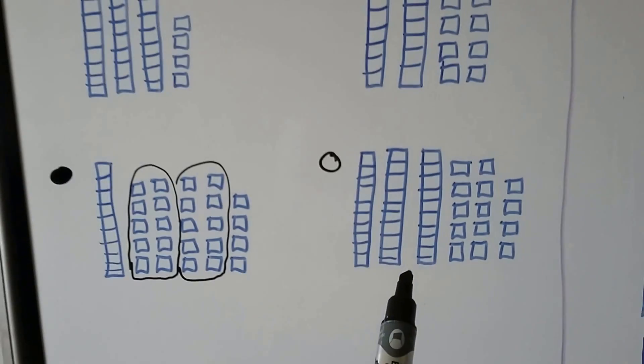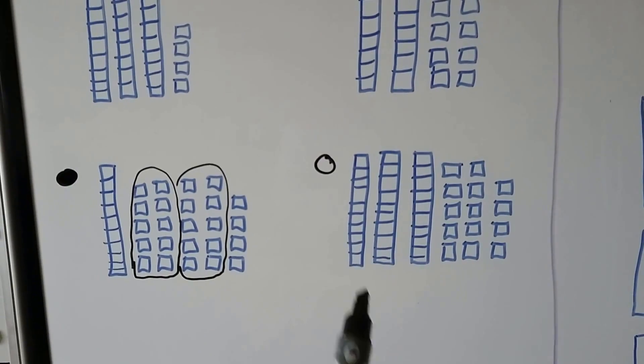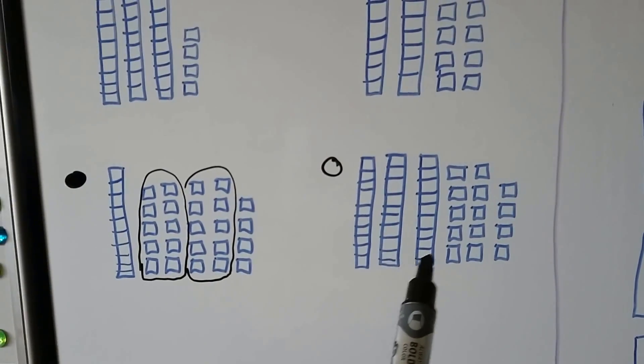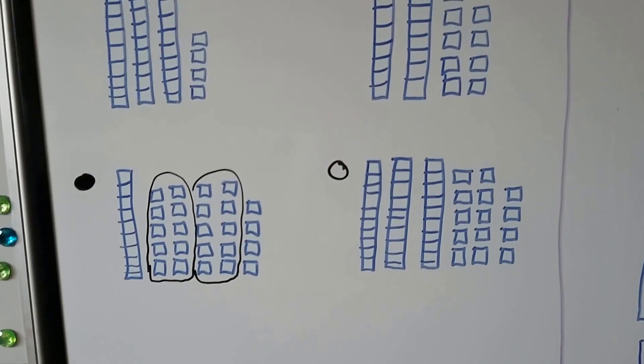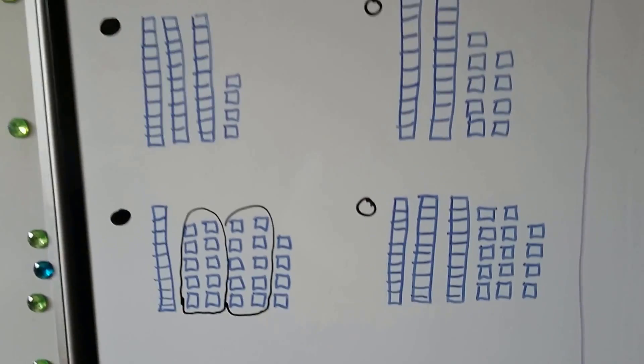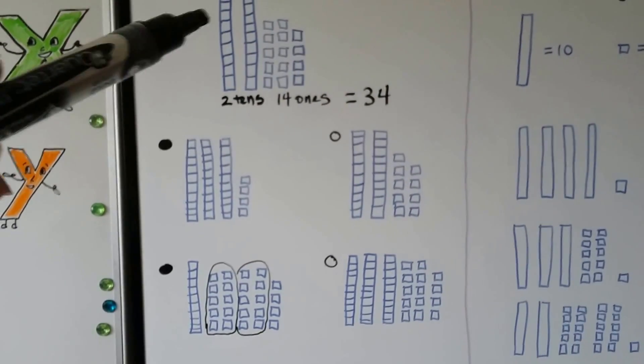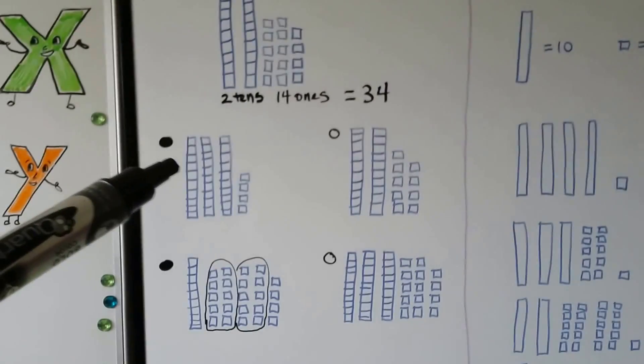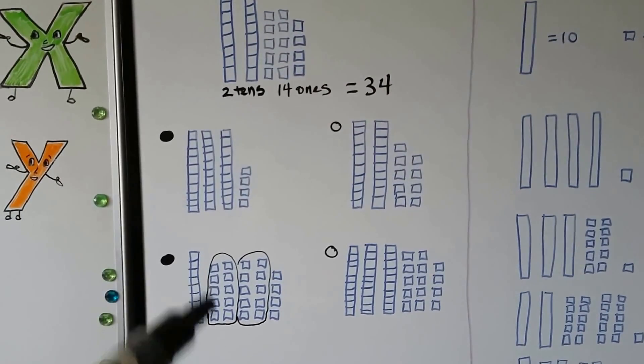How about this one? Does this show three tens and four ones? One, two, three tens. Are those four ones? No. So the only ones that show the same number as this one was this example and this example.